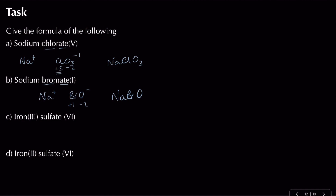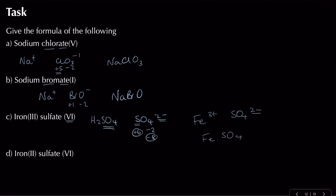For iron(III) sulfate: sulfate is SO4²⁻ (from sulfuric acid H2SO4). Checking: sulfur is plus six, four oxygens gives minus eight, plus six minus eight gives minus two — correct. Using drop and swap with Fe³⁺ and SO4²⁻ gives Fe2(SO4)3, and remember you need brackets around the sulfate.